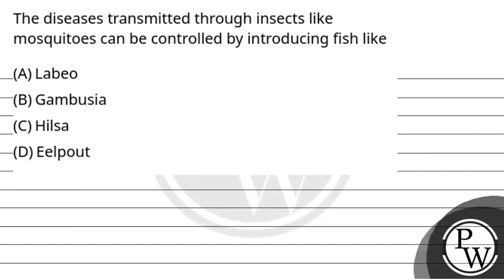Let's read the question. The question says: the diseases transmitted through insects like mosquitoes can be controlled by introducing fish like — first option is Labio, second option is Gambusia, third option is Hilsa, and fourth option is Eel powder.